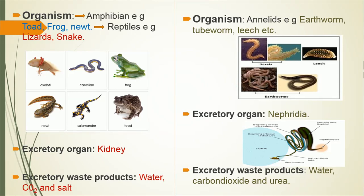Let's look at annelids. Examples include earthworm, tubeworm, leech, and so on. They make use of a structure called nephridia to remove excretory waste. When we have two or more, we call it nephridia; one is called nephridium. A nephridium has two openings. Excretory waste products produced include water, carbon dioxide, and urea.